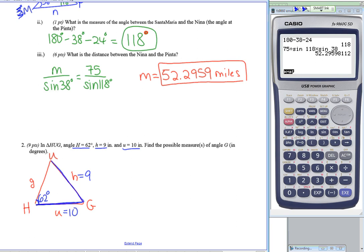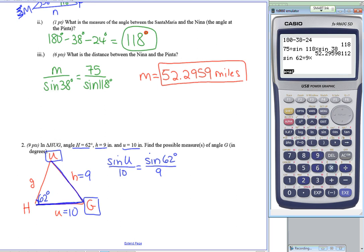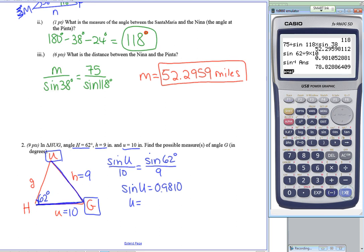I'm looking for angle G, but to find it I first need to find angle U using law of sines. Sine of U over 10 equals sine of 62 over 9. Multiplying across: sine of U equals 0.9810. Taking the inverse sine gives 78.8288 degrees. However, my calculator only gives one answer for inverse sine.